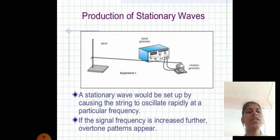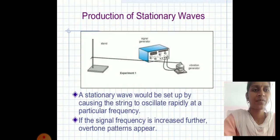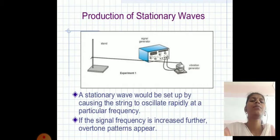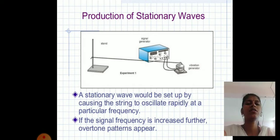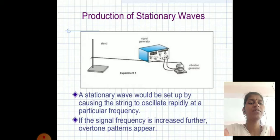The production of stationary waves: a stationary wave would be set up by causing the string to oscillate rapidly at a particular frequency. As the signal frequency is increased, further overtone patterns appear.